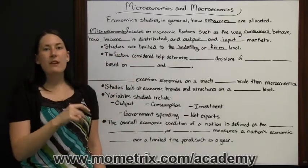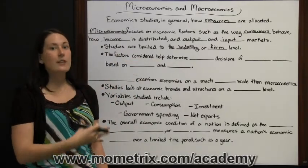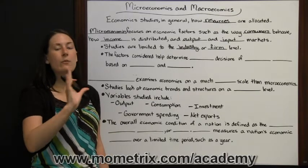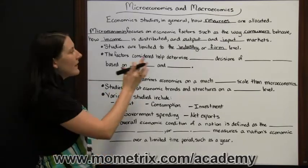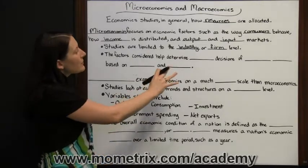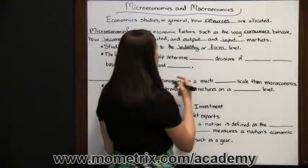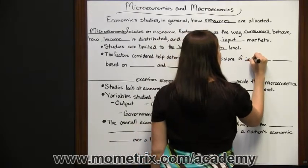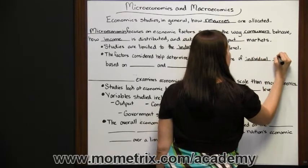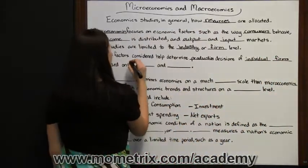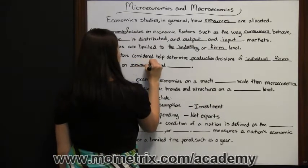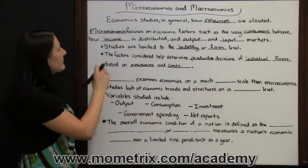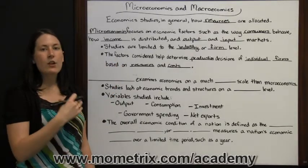We're looking at how consumers behave toward a specific industry, product, or company. How income is distributed for that specific company or for companies within a specific industry. The output and input markets for those specific industries or for a specific company. These factors help determine production decisions of individual firms based on their resources and the cost they would have to put in to be able to make a profit. Microeconomics is just focusing on specific industries or on specific companies.